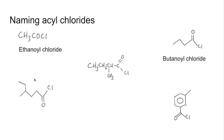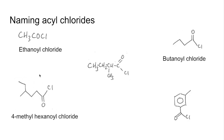We'll look at this one next. So we've got 1, 2, 3, 4, 5, 6 in the longest continuous chain, so this is going to be hexanoyl chloride. We've got a methyl group — that's carbon number 1 where the functional group is, so the methyl is at carbon 4. This is 4-methylhexanoyl chloride.